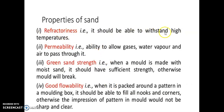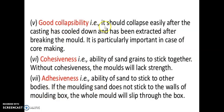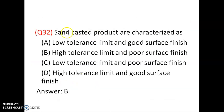Refractoriness means the sand should be able to withstand high temperature. Permeability allows gases, water vapor, and air to pass through — if the sand has low permeability, blow holes will be formed. Flowability means sand should flow into all areas of the mold box. Collapsibility means it should collapse easily after the casting has cooled down.